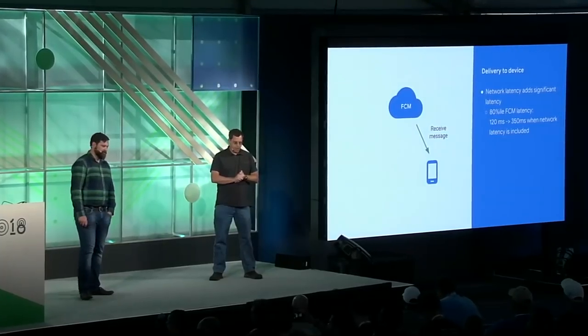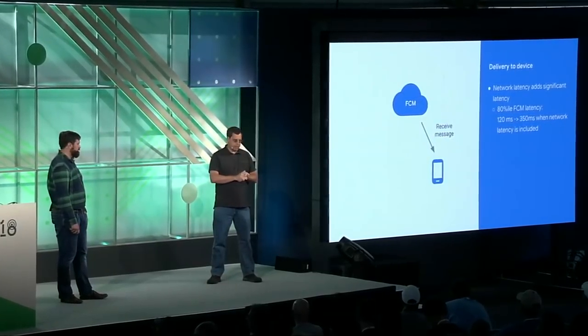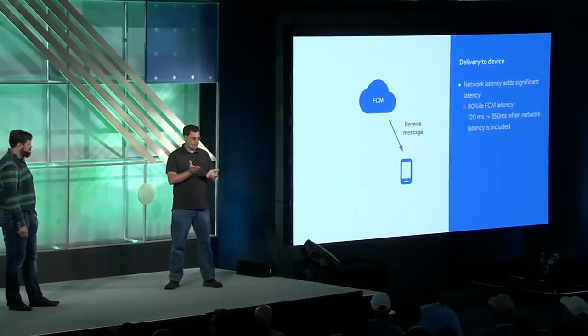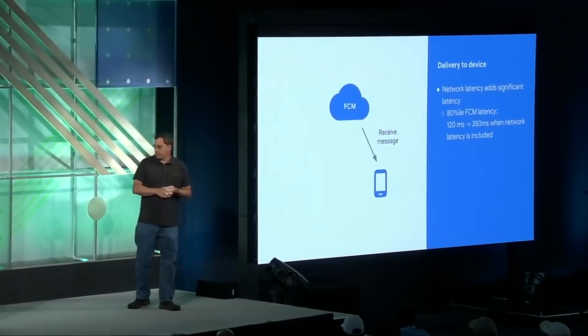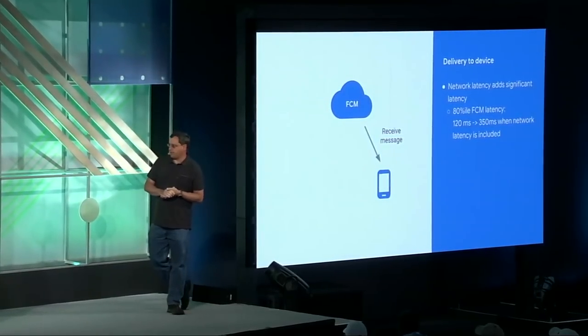Sabir said that mean latency for FCM is around 70 milliseconds. But when testing my app, I often find latencies over 300 milliseconds — what's up? Let's look at messages as they depart FCM servers to the device. Network latency adds significantly to the latency you observe. For example, the 80th percentile latency for FCM servers to dispatch a message is 120 milliseconds. However, when we add network latency into account, latency jumps to 350 milliseconds. So given your 300 milliseconds, I think you should probably get a better network.